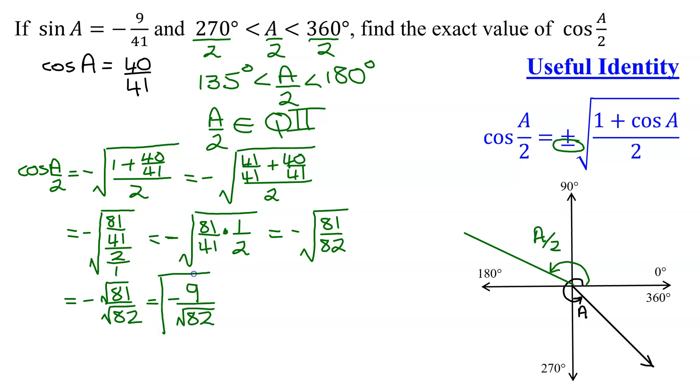Now if you don't need to rationalize your denominator, that is your answer. But if you need to rationalize your denominator, you take negative 9 over the square root of 82, and multiply it by the square root of 82 divided by the square root of 82. That gives you negative 9 times the square root of 82, all divided by the square root of 82 times the square root of 82 is just 82, and that is the answer when you have to rationalize the denominator.